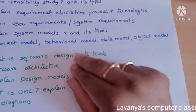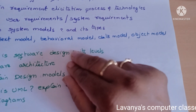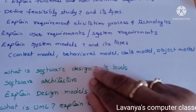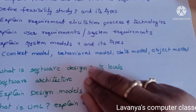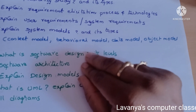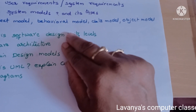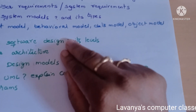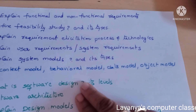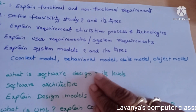Then explain user requirements and also explain system requirements. And then explain system models and its types — there are many models like context model, behavior model, data model, and object model. Explain all these things. These are the unit two questions.